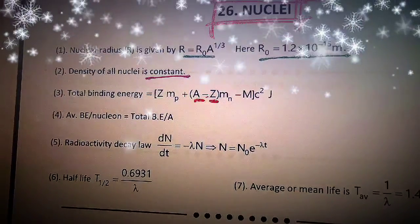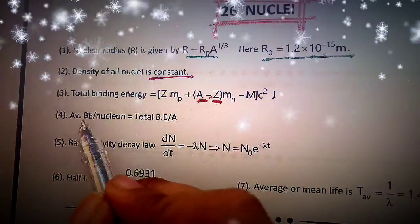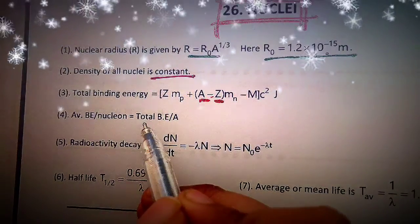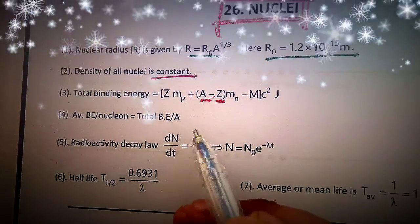Then, the formula is average BE per nucleon equal to total BE by A.